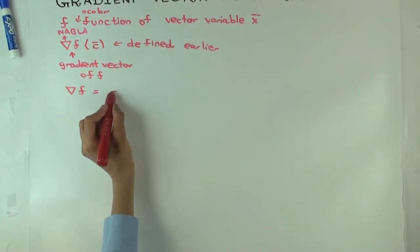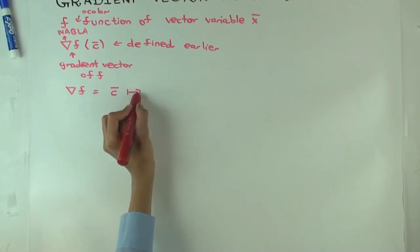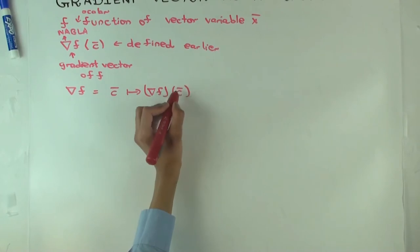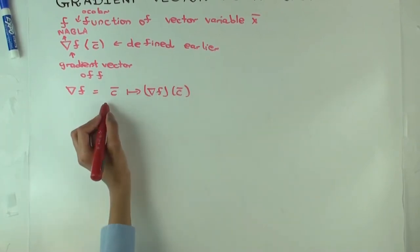It sends vectors of whatever dimension this has to vectors of the same dimension. So, and what does it do? It sends a vector c to nabla f of c. So this, what kind of function is this?